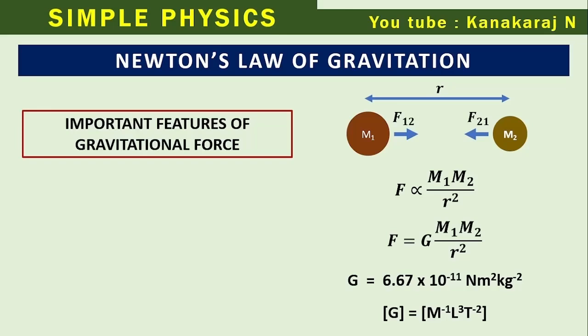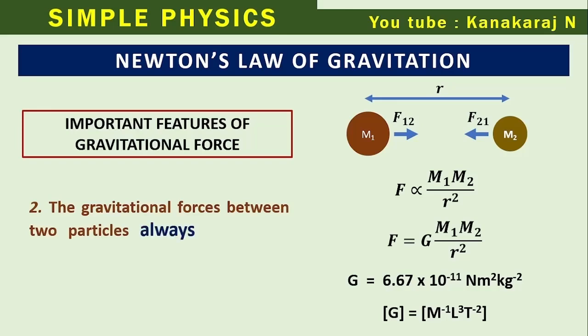M1 is attracted by M2 with the force F12, whereas M2 is attracted by M1 with the force F21. The gravitational force between two particles always constitutes an action-reaction pair. F12 action means F21 is reaction. These two forces are always available.